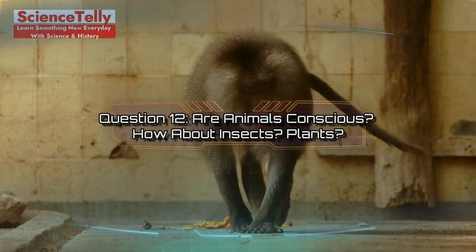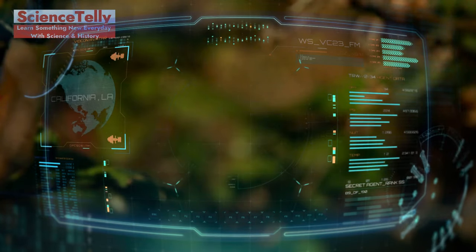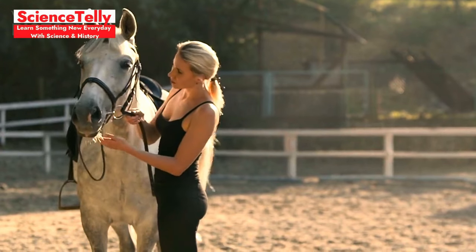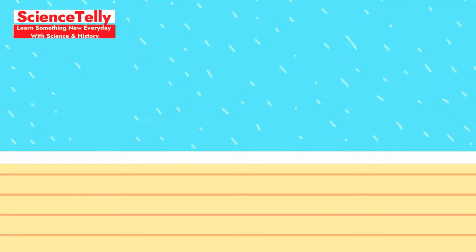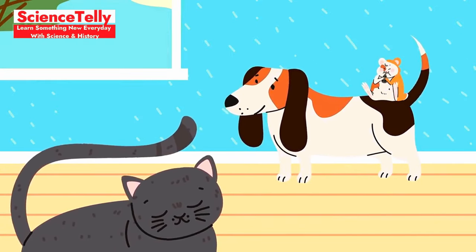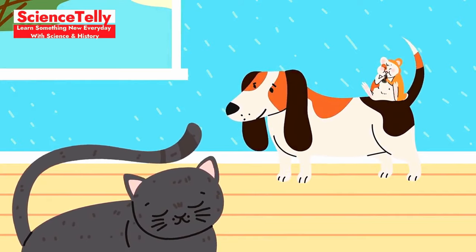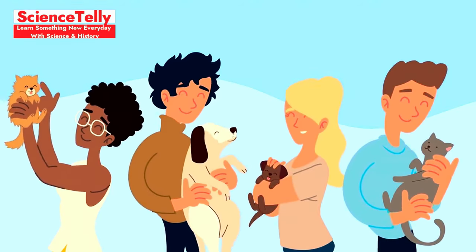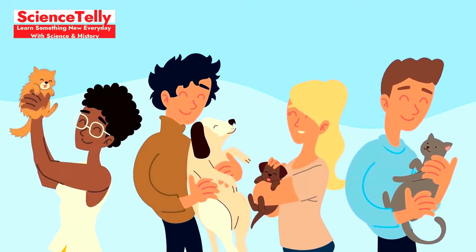Question 12. Are animals conscious? How about insects? Plants? Let's explore a thought-provoking question. When we talk about consciousness, most people think of animals like dogs, cats, or primates, which show clear signs of self-awareness and social behavior. Many studies suggest that these animals possess some level of consciousness, able to experience feelings and emotions.